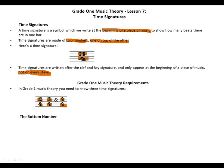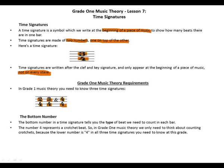The bottom number in a time signature tells you the type of beat we need to count in each bar. The number 4 represents a crotchet beat. So in Grade 1 music theory, we only need to think about counting crotchets, because the lower number is 4 in all three time signatures.